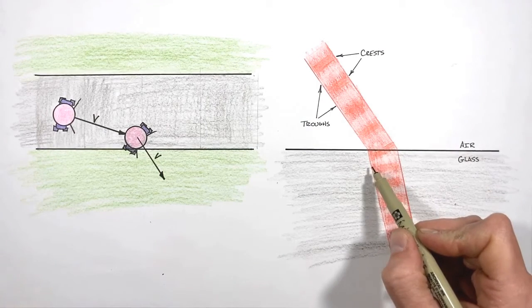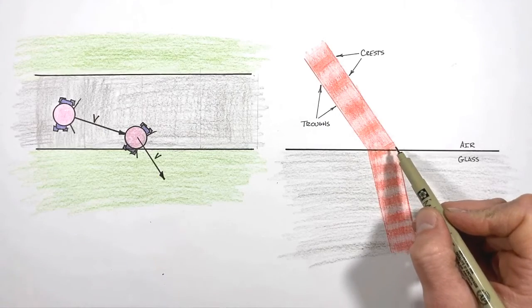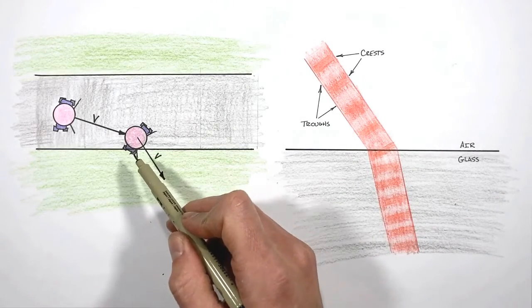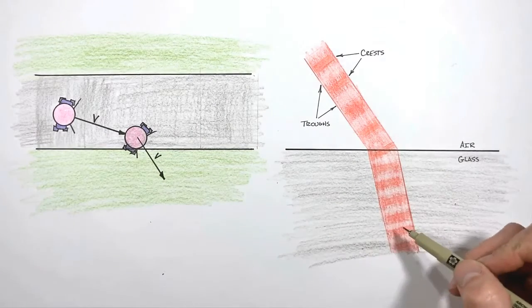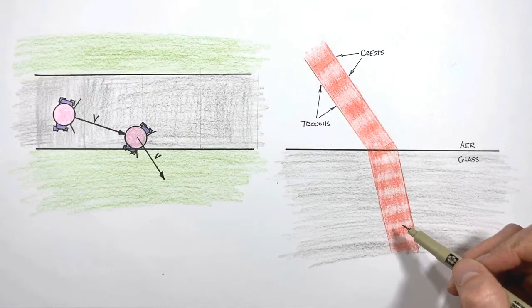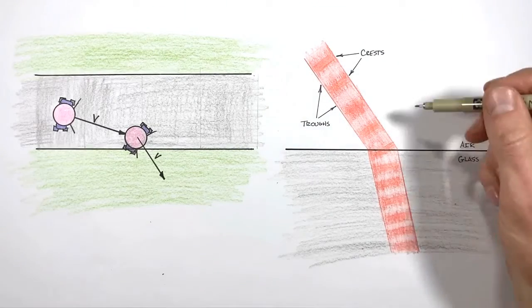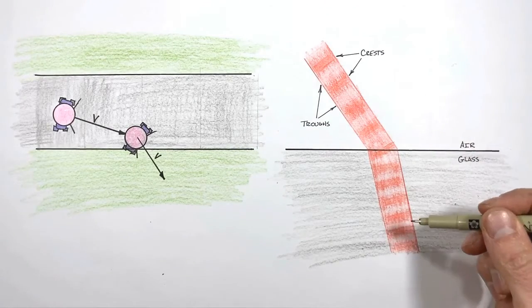And because part of the wave slows down before the rest of the wave, just like when Suzie had one skate on the grass, the wave will appear to turn. And this process of bending light as it travels from one medium into another is called refraction.